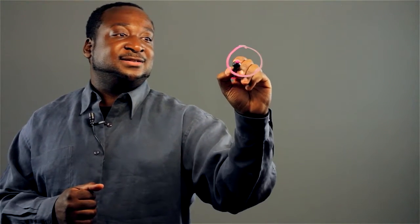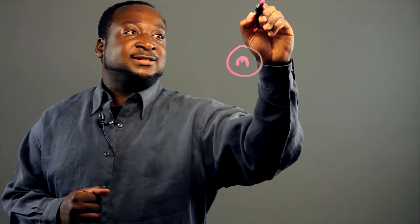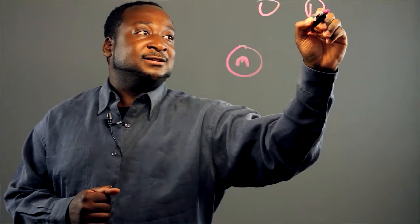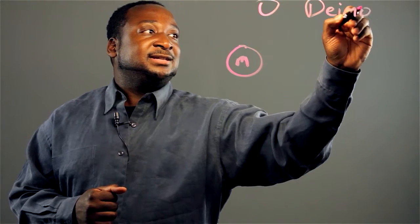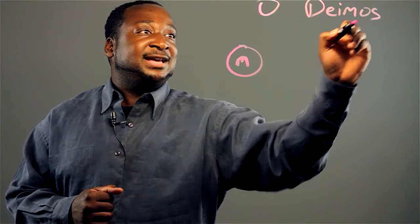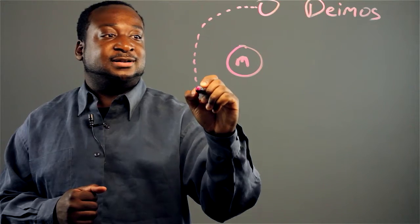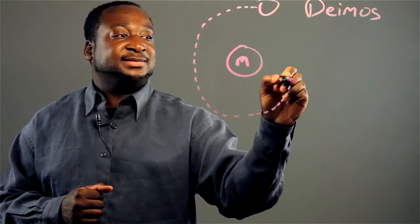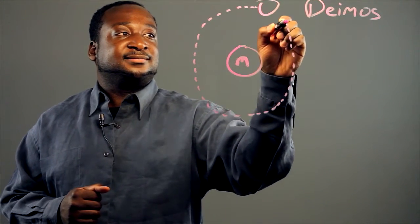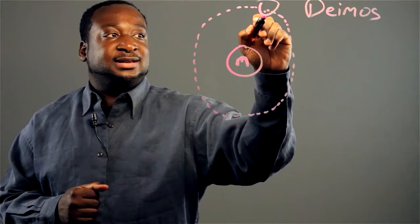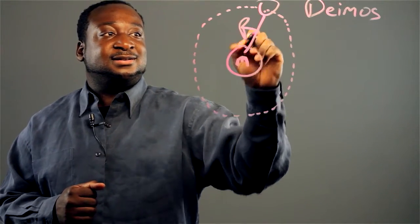Mars is a planet here, call this M, M for Mars. And there's a satellite that travels around Mars, it's actually called Deimos, D-I-M-O-S. And it travels around it in a circle, in this radius, I'll call it R.